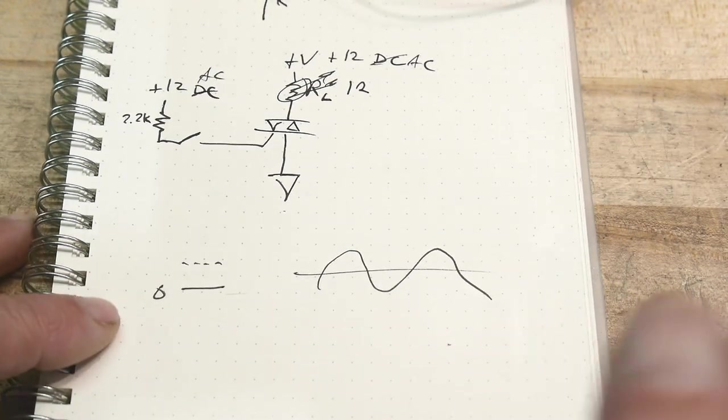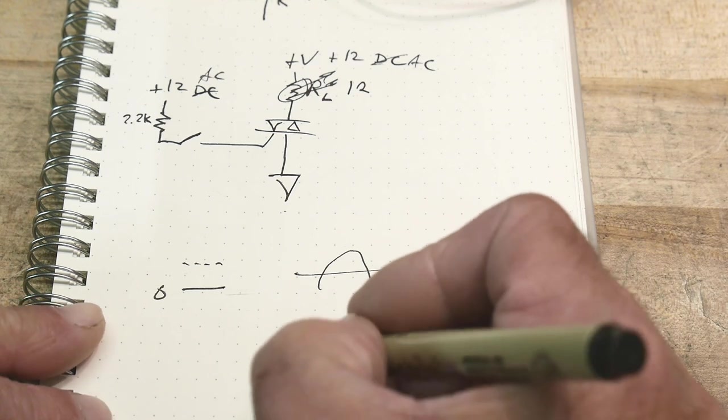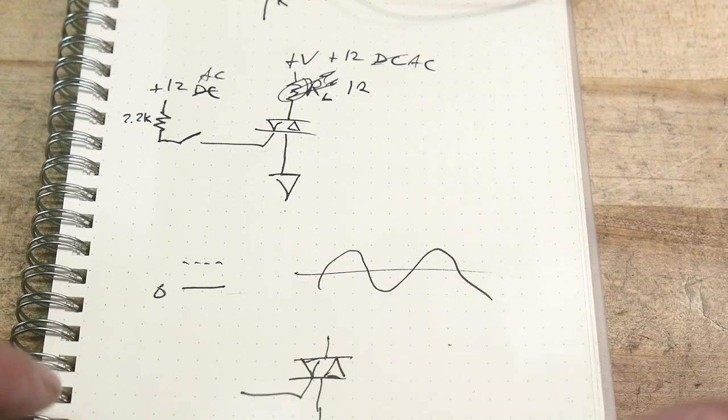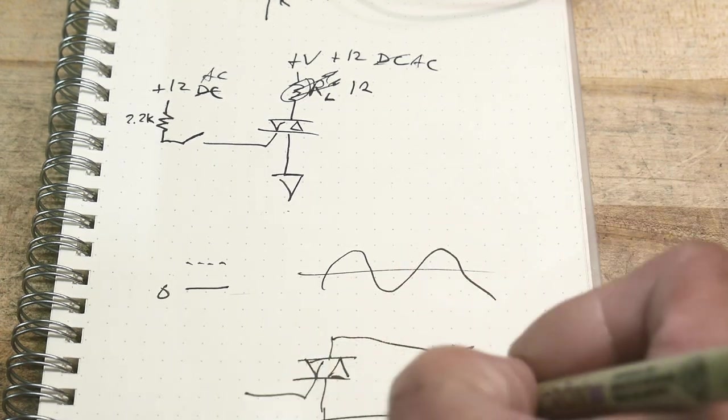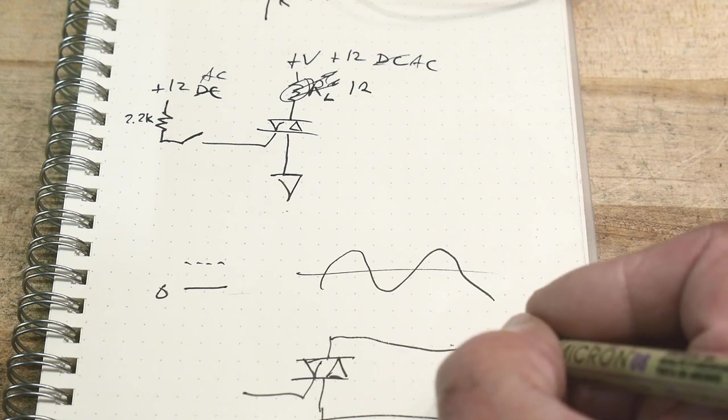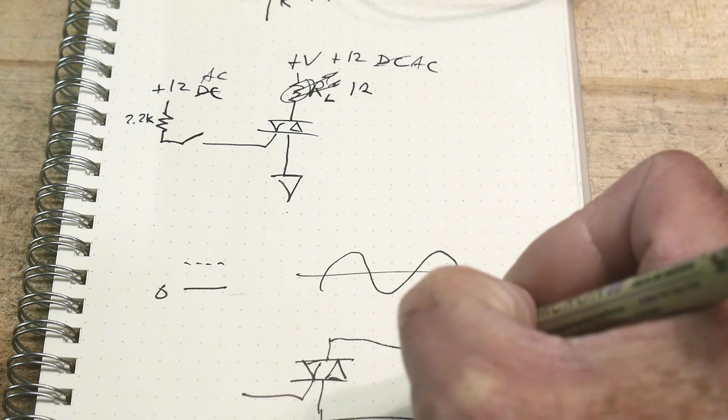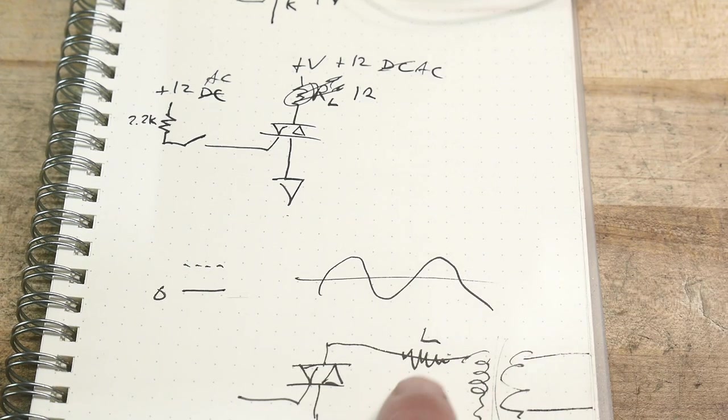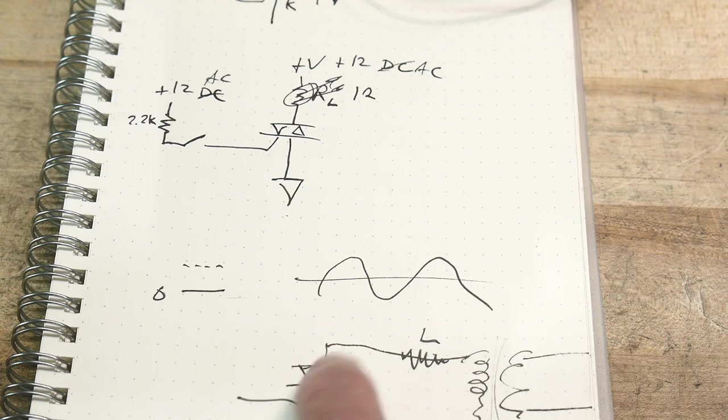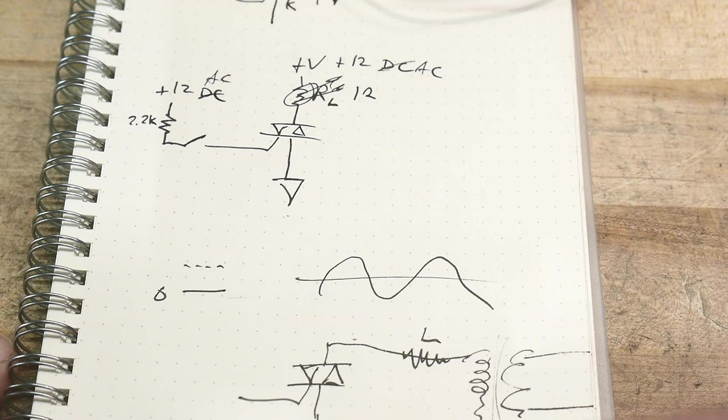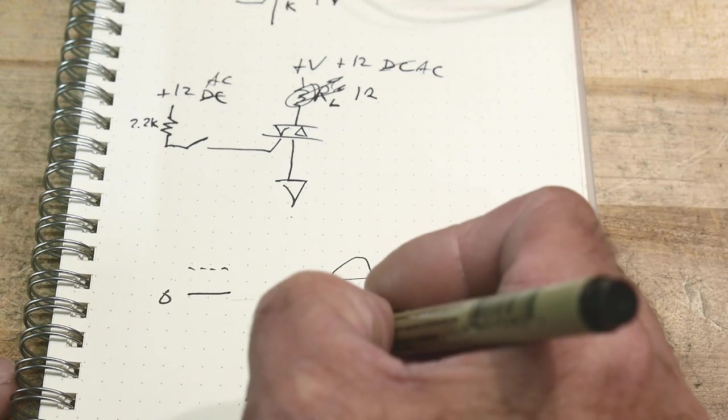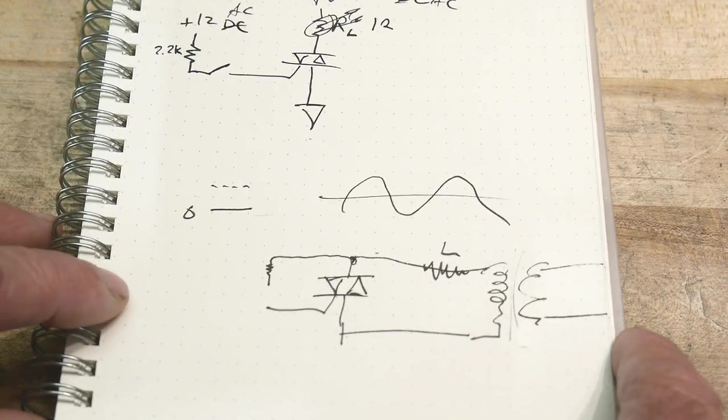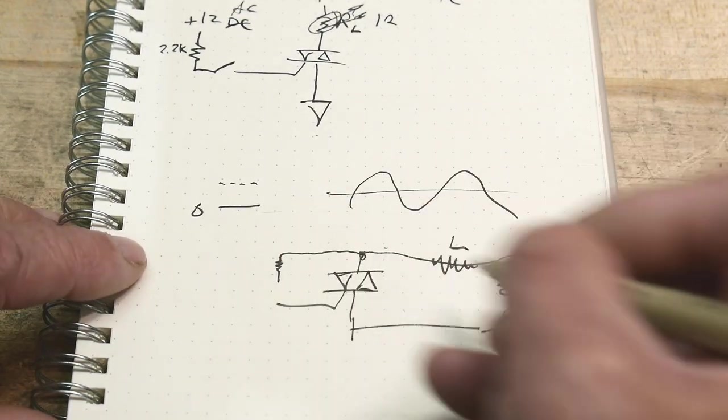So a lot of times what people will do they'll have their device here and they're trying to use it as a switch. Okay so it's coming over here and they're going to be switching something. Okay so let's say they have some load we'll put the load here. Okay they have some load this is our load and then they have a transformer here and you're trying to turn on and off the load that has AC. You're trying to turn that on and off using this. So you can take the high side and you can try to bring it around and have a switch here that's a mechanical switch but if you wanted to use an electrical device you would use an optocoupler.